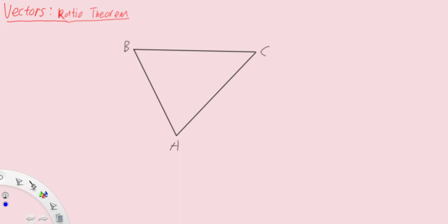So once again point D, 2 is to 3. Let's say now we have vector AB and vector AC instead, where vector AB is vector B and vector AC is vector C. Again, B to D to D to C is 2 is to 3.